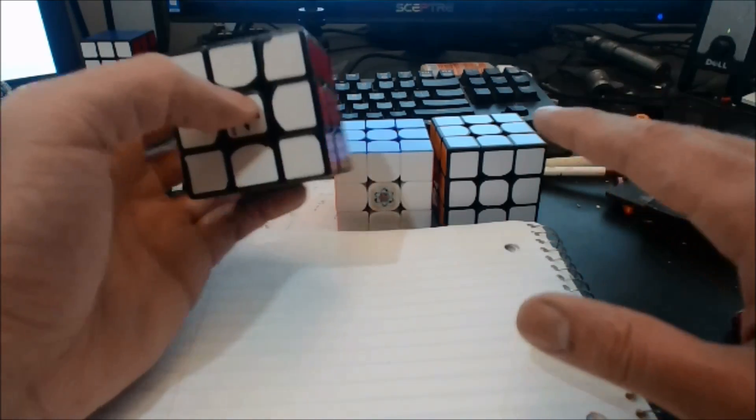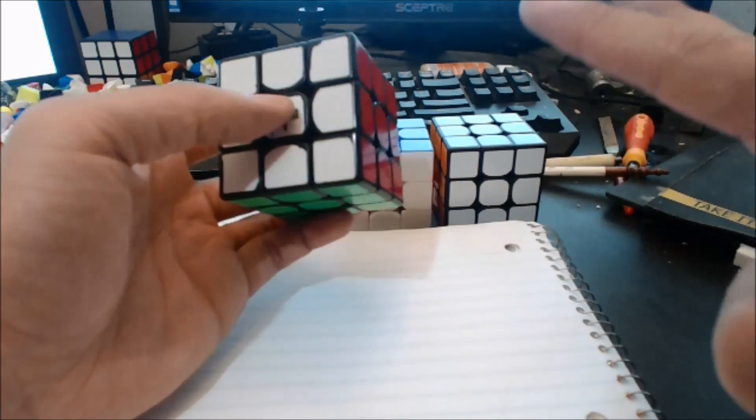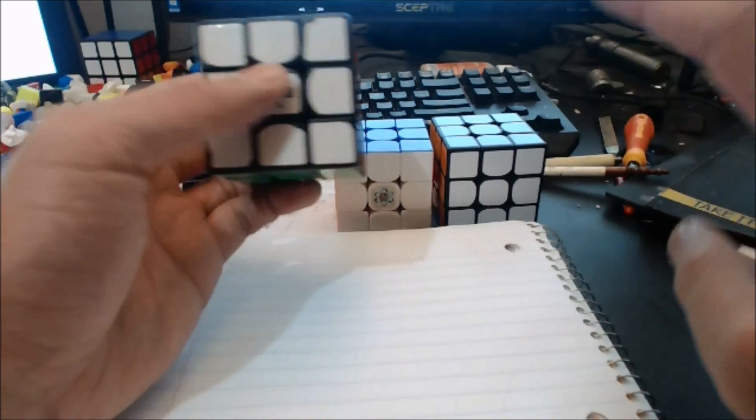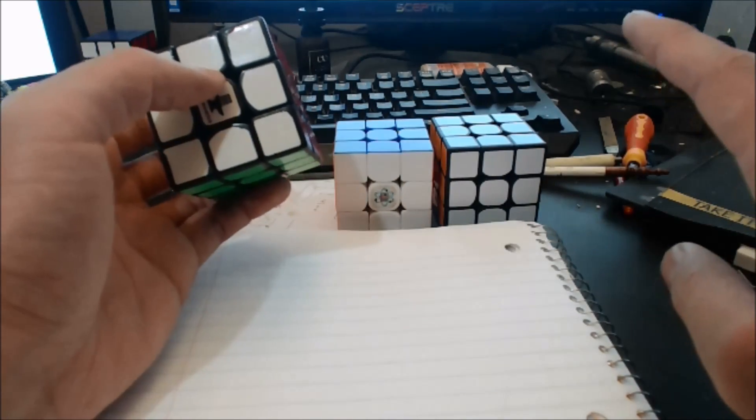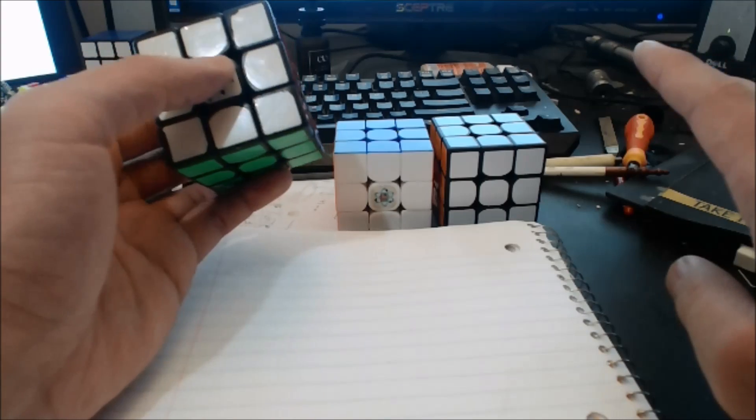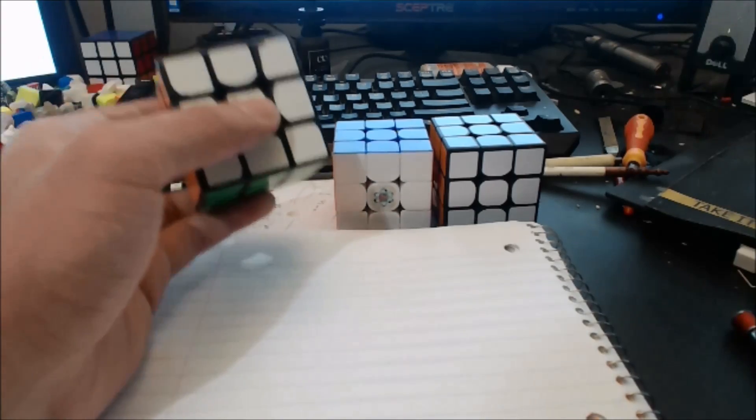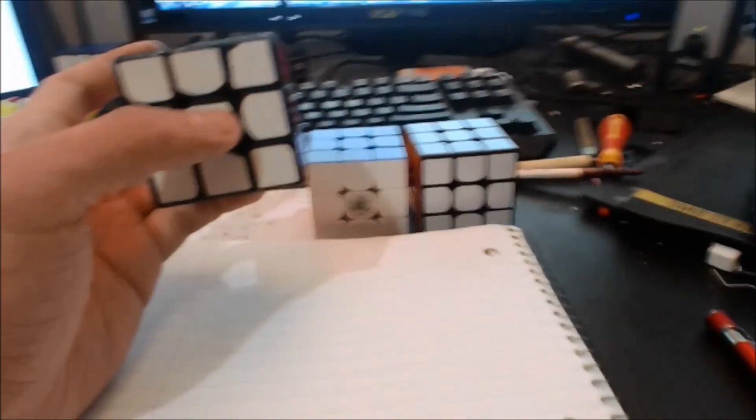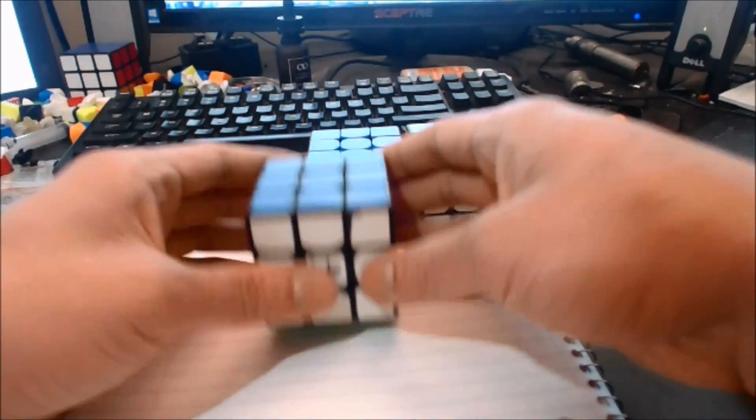The cool thing is the chance that happens—you getting a bunch of 1 by 1 by 2s—is actually pretty high. So I'm gonna go ahead and skip to 2 by 2 by 3 and I have a 2 gen scrambler made by Michael Gottlieb, so let's get started.